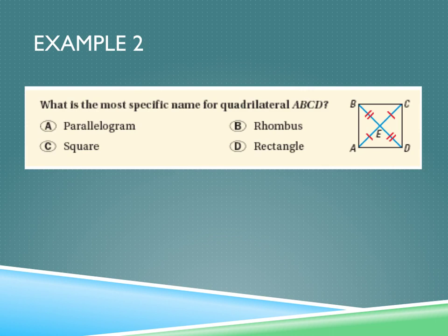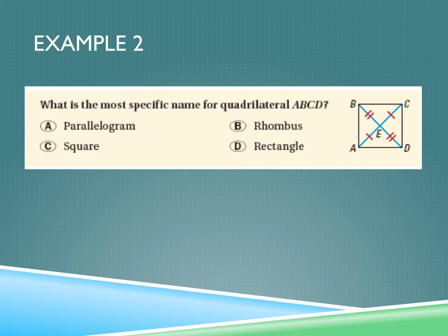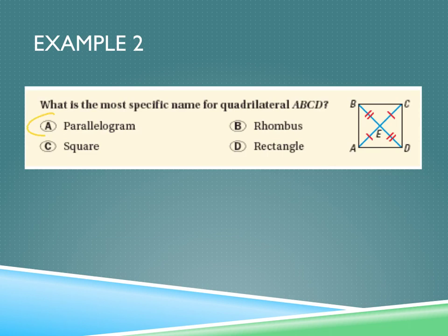What is the most specific name for quadrilateral ABCD? All we know here is that the diagonals have been bisected. We don't have enough information to show it's a rhombus — we don't know anything about the angles or the sides. So we cannot narrow it down to a square, rhombus, or rectangle. The only thing we can determine from this picture is that the diagonals have been bisected, so it's a parallelogram.